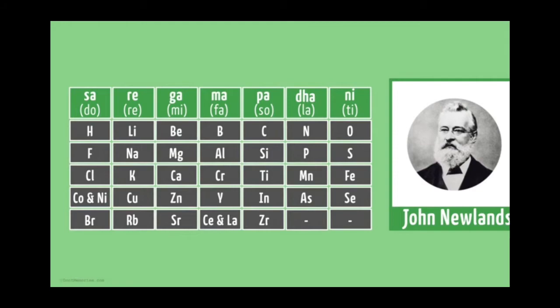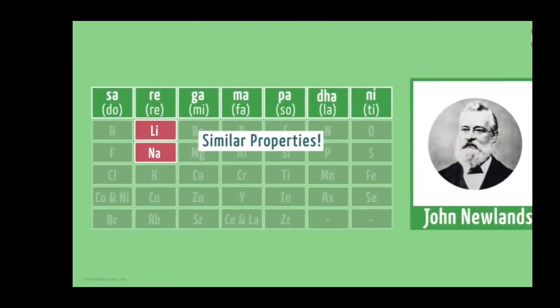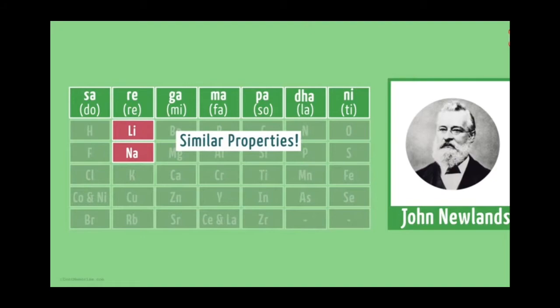This is how Newlands arranged the elements in a table. For example, if we take Lithium, then the eighth element of it is Sodium. So, Lithium and Sodium have similar properties. And the next example is Beryllium. And the eighth element of it is Magnesium. Beryllium and Magnesium resemble each other. They have similar properties.